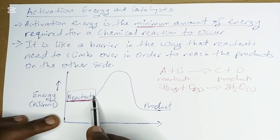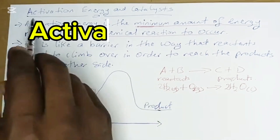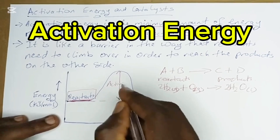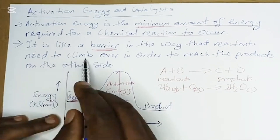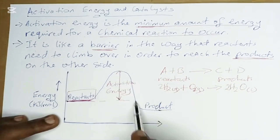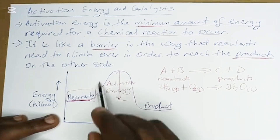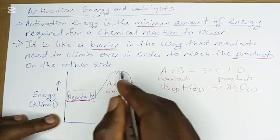When a reactant is passing through a phase and going to the product phase, there is a barrier, because the energy needed to climb it is called activation energy. It is like a mountain — a barrier in the way that the reactant needs to climb over in order to reach the products on the other side. That energy needed to climb is the activation energy, and the barrier itself is also called the energy barrier.